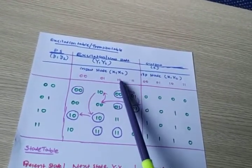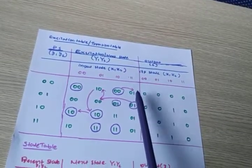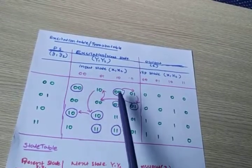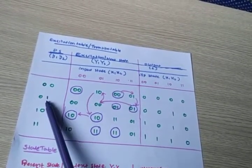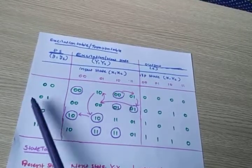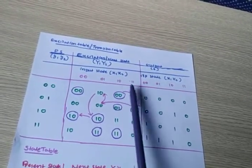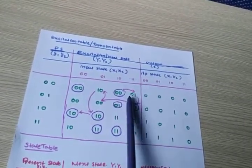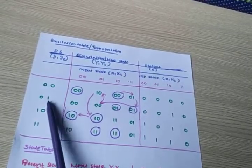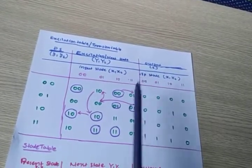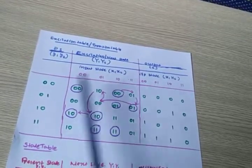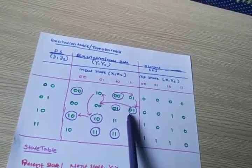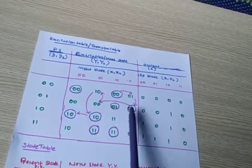Here, the input is changed from 1,0 to 1,0; it changes to 0,1. After a delay, this 0,1 becomes the present state. So what is the present state? 0,1. For this 0,1 present state, what is the next state under the 1,1 input condition? The 1,1 input is held constant. So at that time, the present state is 0,1 and the input is 1,1. The next state is 0,1 only — both are equal. That means it is stabilized.